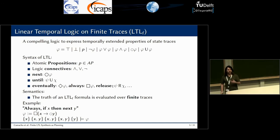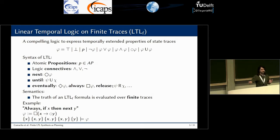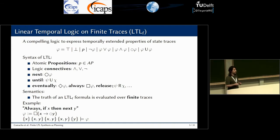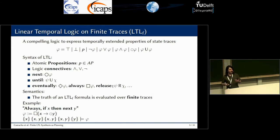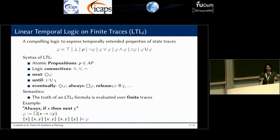The problem is: how do we describe the specification? In our work, we use linear temporal logic on finite traces — for short, LTLf. LTLf is a compelling language to express temporally extended properties in finite state traces. The syntax of LTLf comprises atomic propositions, logic connectives, and temporal operators like next, until, eventually, always, and release. The truth of an LTLf formula is evaluated over finite traces. For example, a formula that reads 'always if X then next Y' is satisfied by a finite trace where in each state that satisfies X, the following step Y also holds.